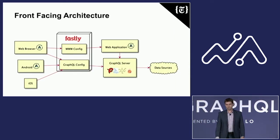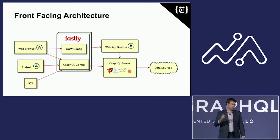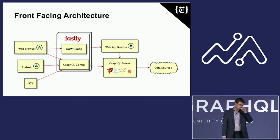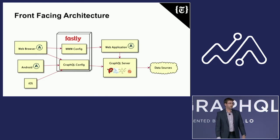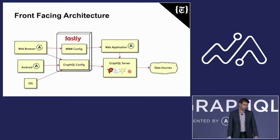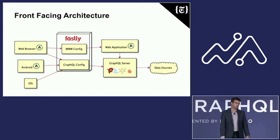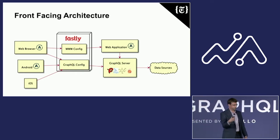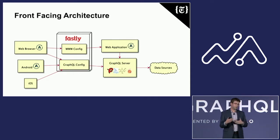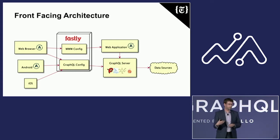This is how GraphQL fits into our front-facing architecture. Starting on the left, we have our major clients: our web browser, our Android app, and our iOS app, two of which are using Apollo Client. Then we have Fastly — a CDN — which allows us to deliver fast, reliable, cacheable content to all our users. We have a config for our website and a config for GraphQL. Then we have the web application serving the HTML pages, connecting to the GraphQL server behind the scenes. And on the right, we have all our data sources.